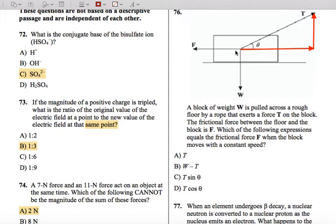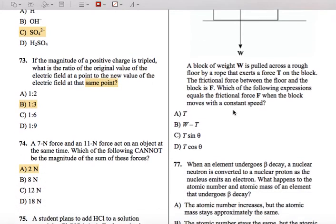Which would mean that this force pointing to the left would be equal to this force pointing to the right. And the magnitude of this force is just T times cosine of theta. So that means that T cosine theta is equal to F, and our answer is D.